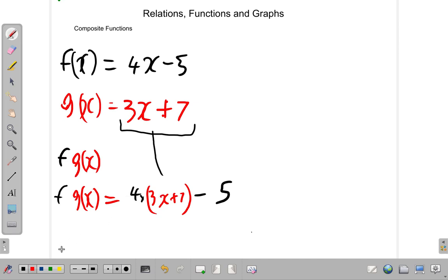Now let's do our calculation. f g of x is equal to 4 multiplied by 3x plus 7.